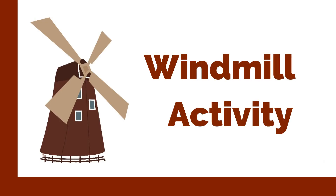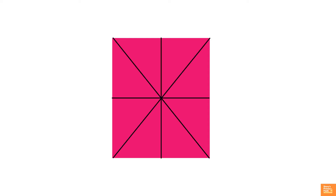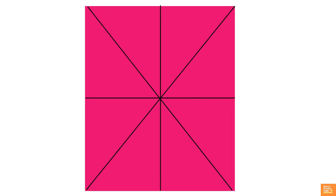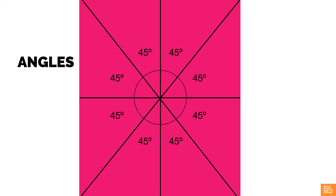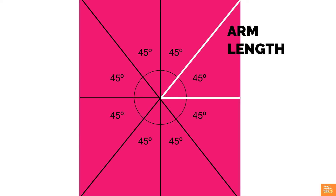Windmill activity. In this activity, we are going to use a card paper model of a windmill and observe the angles formed at the center of the windmill. Subsequently, we shall ask children to take a closer look at the angles, their orientation, and arm length.